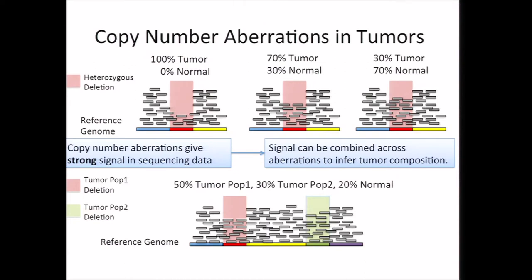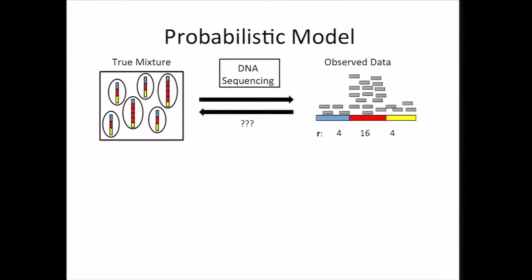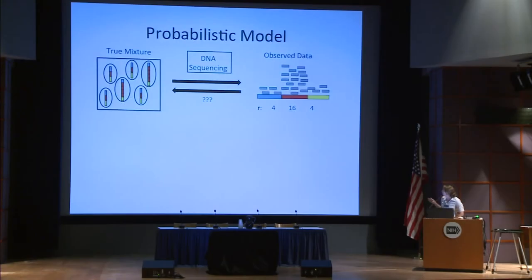Additionally, if a tumor population contains multiple copy number aberrations, we'd expect this shift in read depth to be consistent across all of them. It's really these observations that have motivated the work we've done in our group. We've devised a probabilistic model of sequencing data when the different tumor populations contain different copy number aberrations. Consider this example where we have a true mixture of two different tumor populations, and we've partitioned our genome into three equal-length intervals: blue, red, and yellow. The data we observe from a sequencing experiment would be read depth information, where we count the number of reads that align to each of these intervals. We'd like to be able to go from this observed data to infer something about our true underlying mixture.